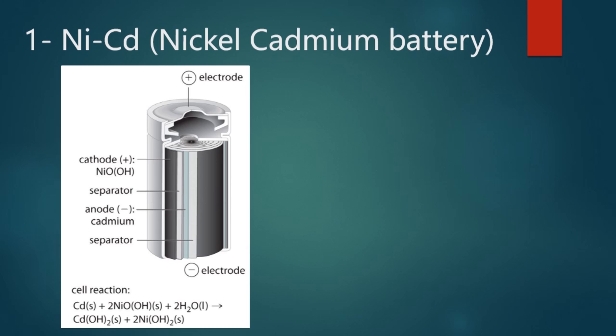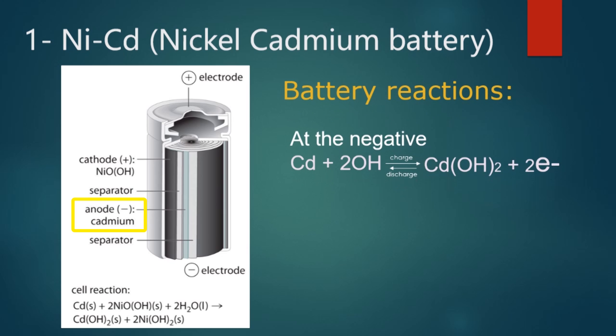Nickel-cadmium cells can supply extremely high currents and can be recharged rapidly. At the anode, cadmium loses two electrons and combines with hydroxide ions to form cadmium hydroxide plus two electrons. At the cathode, hydrated nickel oxide is reduced and reacts with water to form nickel hydroxide and hydroxide ions.